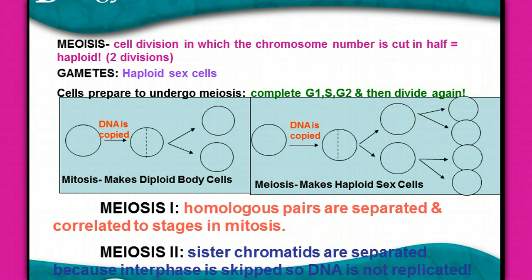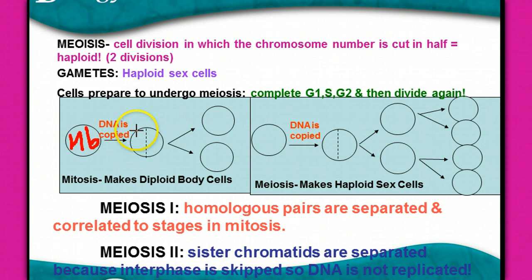There isn't a spot for you to write this down, but pay attention right now. When the DNA gets copied, the original cell has 46 chromosomes. Right before it's copied, it doubles — it's got 92 involved.